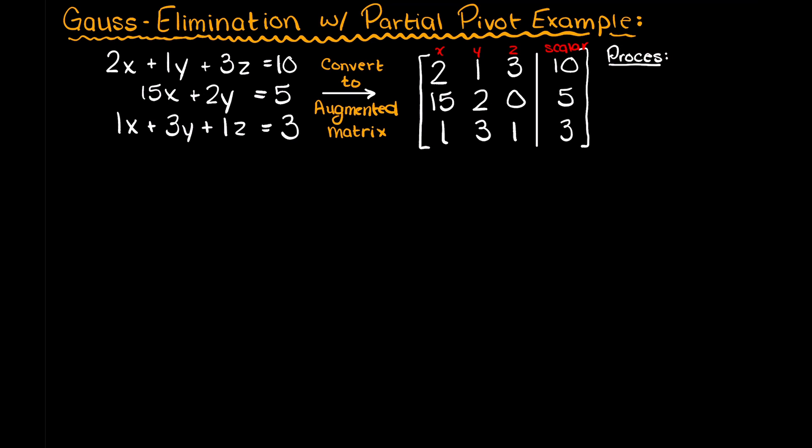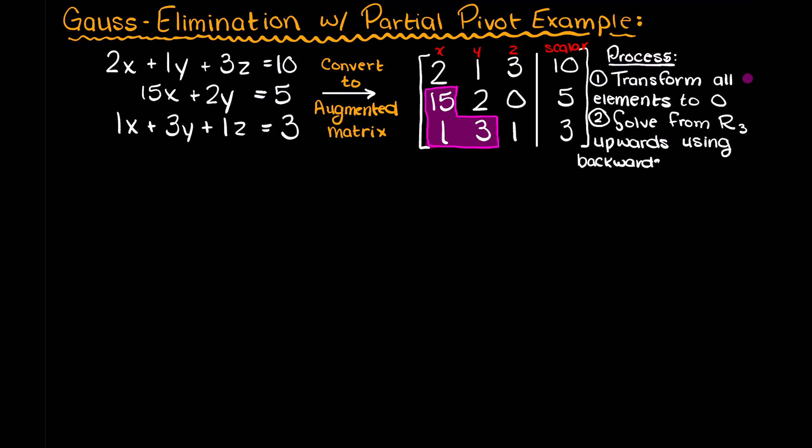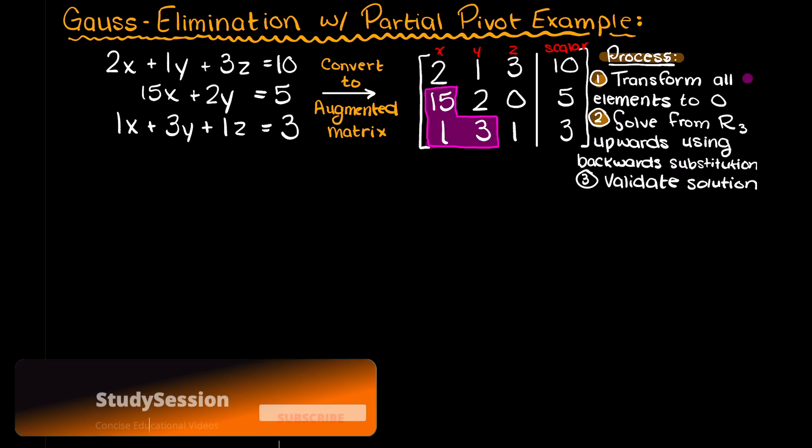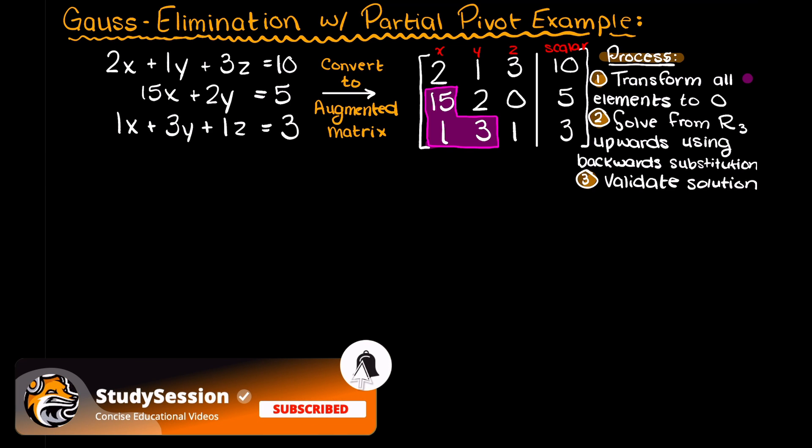To solve this problem using Gauss elimination, we are going to follow this procedure. Firstly, we'll transform all the elements that are pink here to 0, and then we will use backward substitution to work back and solve for all of our variables. Then, lastly, we'll validate our variables are correct by proving that they do solve our system of linear equations.